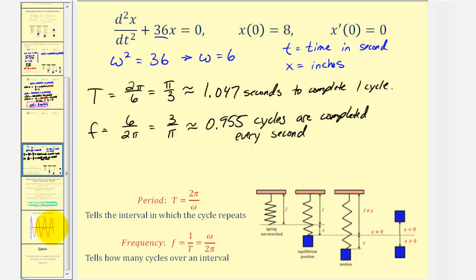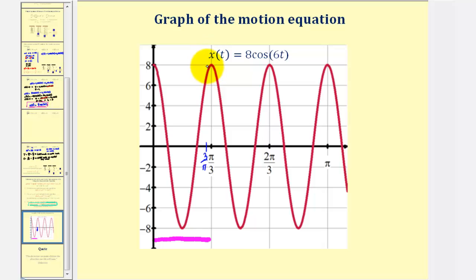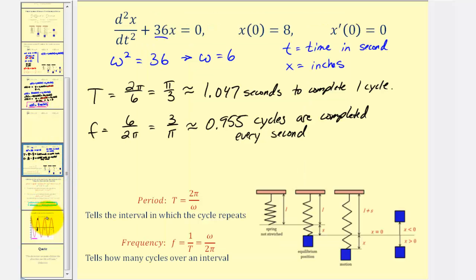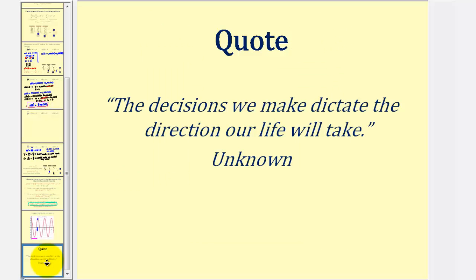Let's finish by looking at the graph of our position function X of t equals eight cosine 6t. Analyzing the graph, over an interval of length pi over three seconds we can see exactly one period. And at a frequency of three over pi, we can observe approximately 0.955 cycles completed over one second — just slightly shy of one complete cycle. I hope you found this helpful. In the next few videos, we'll look at more examples where we have to write the differential equation from given information.